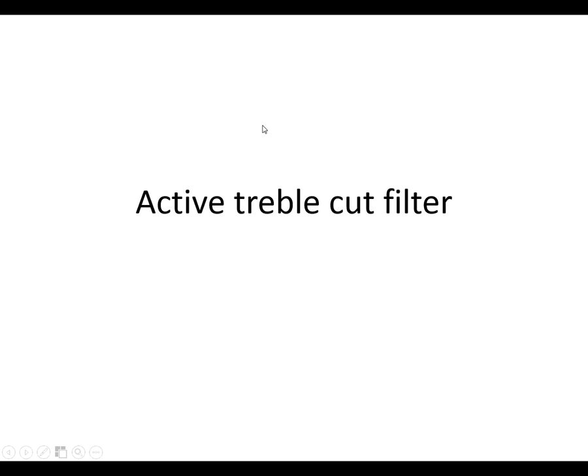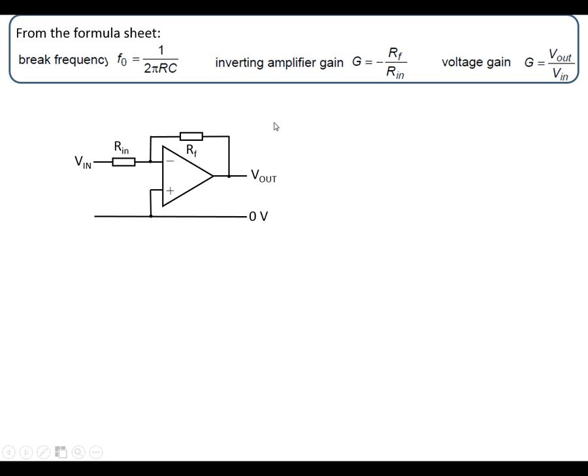Active treble cut filters are based upon the inverting amplifier circuit. The voltage gain of an inverting amplifier is minus RF over Rin. We're not going to worry about the minus sign because taking logs of negative numbers is impossible. In this case, we're going to put a capacitor in the feedback in parallel with the resistor and see what effect this makes.